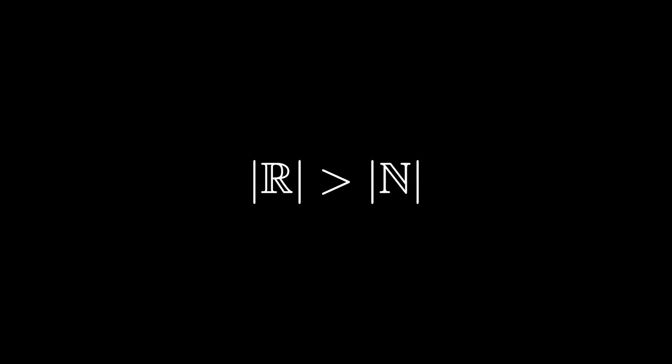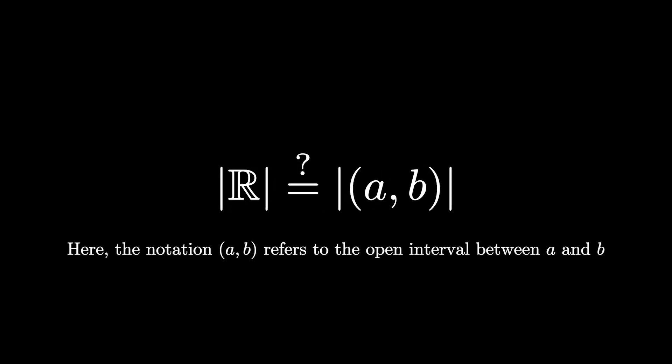Cantor's diagonal argument is famous for proving that the cardinality of the real numbers is greater than the cardinality of the naturals. But is the cardinality of the real numbers equal to the cardinality of the real numbers in a finite range, let's say from A to B?